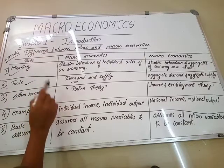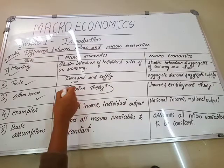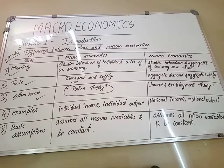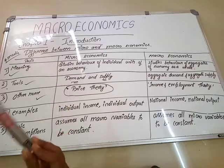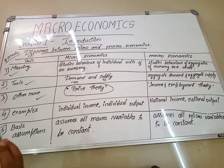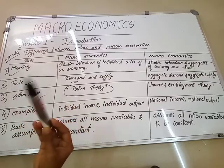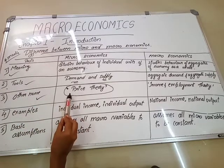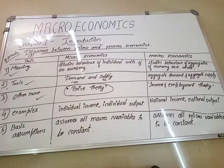Third difference: what are the other names? Microeconomics is also called the price theory — we call it the price theory. Why? Because in microeconomics, we are studying about the price of a commodity — how the price changes, how supply changes, how demand changes. That is why the main factor here is price, so we also call it the price theory.